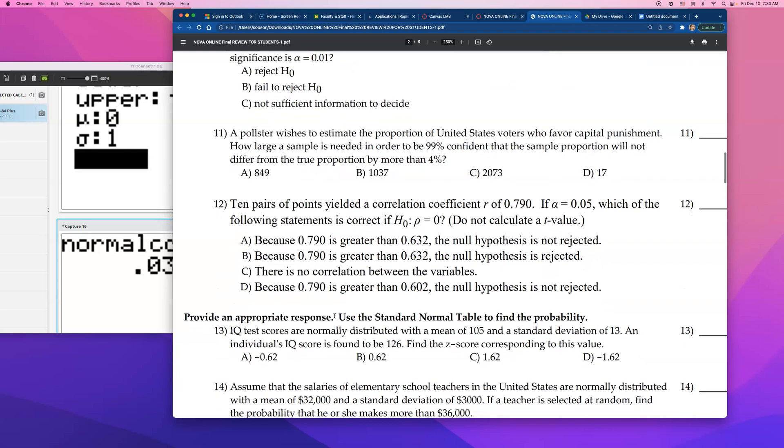All right, here's 11. A pollster wishes to estimate the proportion of United States voters who favor capital punishment. How large a sample is needed in order to be 99% confident that the sample proportion will not differ from the true proportion by more than 4%? Now, remember, for these sample size questions, you do have a formula that you can use.